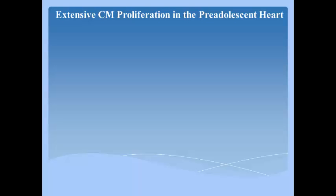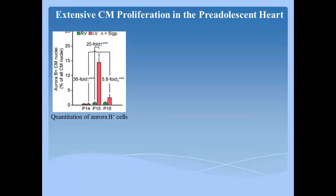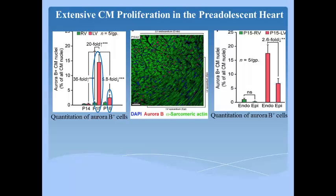Authors found extensive proliferation in the pre-adolescent heart. Transverse sections of ventricle from mice sacrificed between 8 a.m. and 12 p.m. revealed a 36-fold increase in left ventricle cardiomyocyte mitosis between P14 and P15, followed by an abrupt 5.84-fold decrease between P15 and P16. These changes parallel changes in expression of mitosis-promoting genes. Nuclear localization of Aurora B in most mitotic cardiomyocytes indicated these cells were in prophase. Mitotic cardiomyocytes were 2.4-fold more abundant in sub-endocardial than sub-epicardial myofibers of the P15 left ventricle.